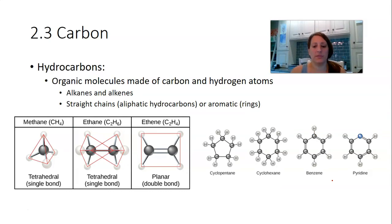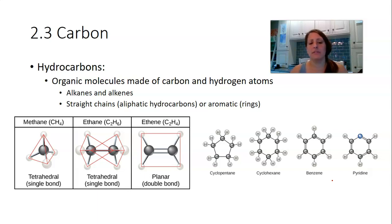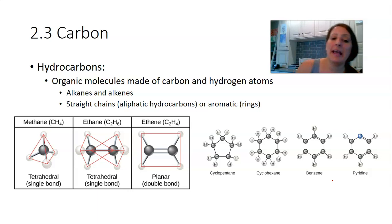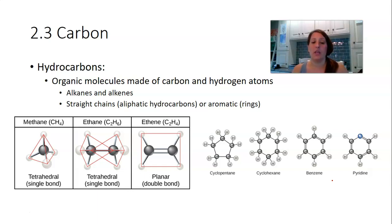The first group of molecules to introduce before carbohydrates, lipids, nucleic acids, and proteins are the hydrocarbons. Hydrocarbons are organic molecules made up of carbon and hydrogen atoms. There are a couple of classes: alkanes, alkenes, and alkynes. These can be straight-chain molecules — called aliphatic hydrocarbons — or they can be in rings, called aromatic hydrocarbons.